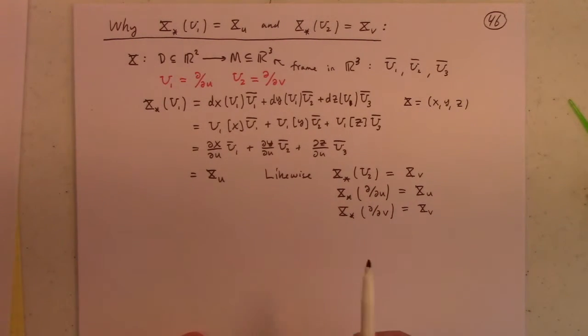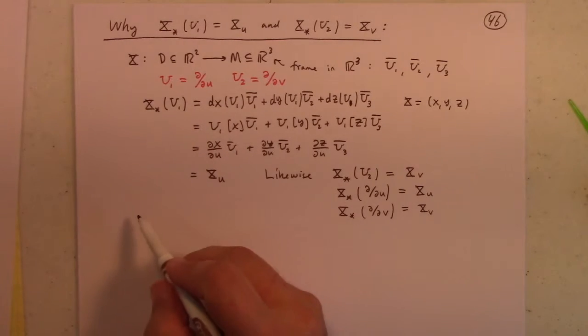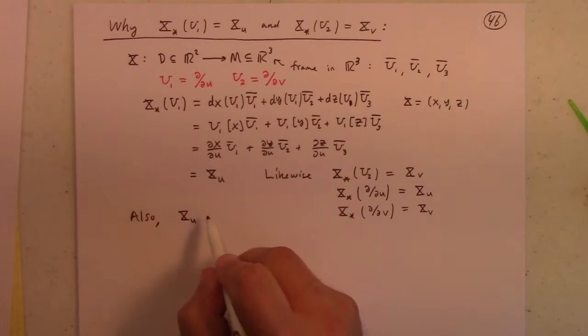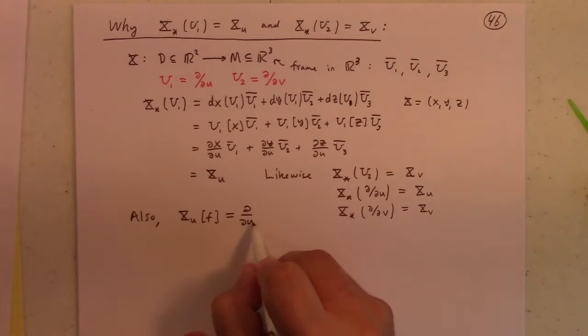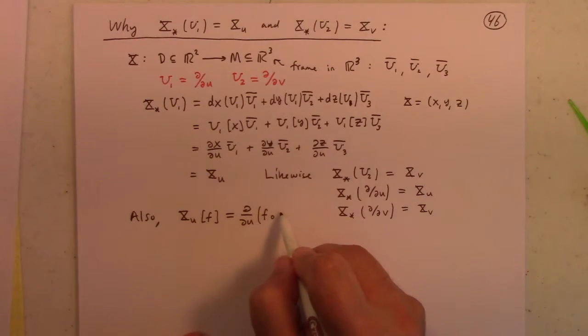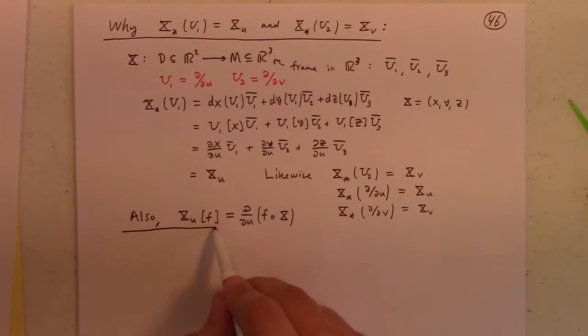But another important factoid for you, also in the same family of reasoning, if we calculate XU acting on a function at various points in time, we'll need to use that that's partial partial U of F composed with X. All right, so why is that true?